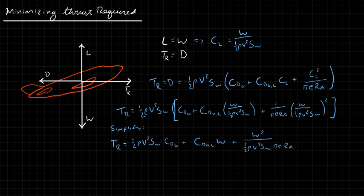Since velocity appears in two places, we can minimize thrust required by finding where the derivative of thrust required with respect to velocity equals zero. This follows our process: first derive thrust required, then minimize it with respect to velocity. We take dTR/dv and set it equal to zero to find the velocity at which thrust required is at a minimum.